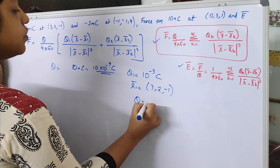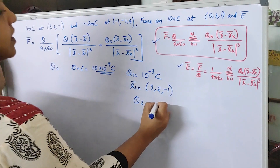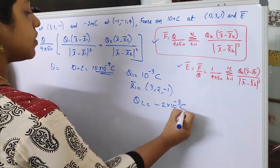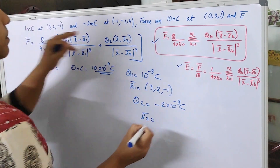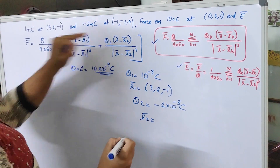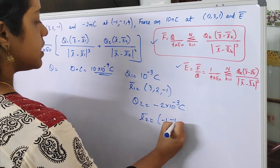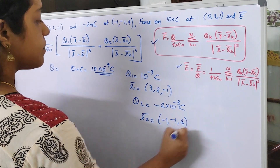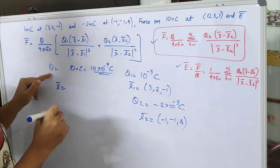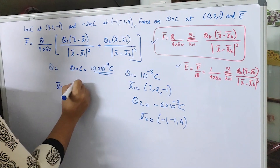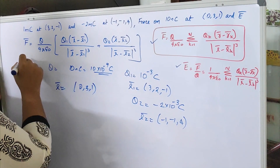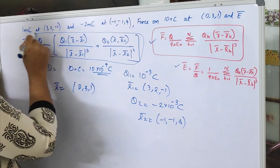q2, the second charge, is minus 2 times 10 raise to minus 3 coulomb. Vector r2, the location of the second charge, is (minus 1, minus 1, 4). Vector r, the position of the main charge, is (0, 3, 1). Now you just have to substitute in this equation.